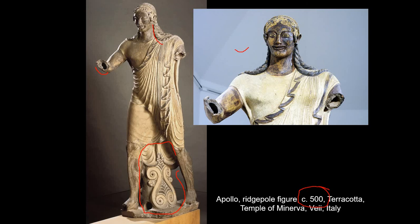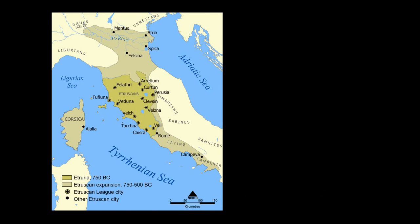The high point of Etruscan civilization is analogous to the archaic period in Greece — the Greeks peak later in the classical period. By the time we get into the 5th century, Etruscan influence is waning and they're actually becoming more dominated by the growing power of Rome.